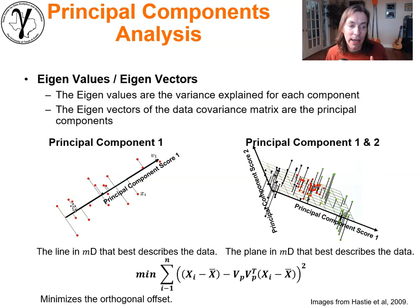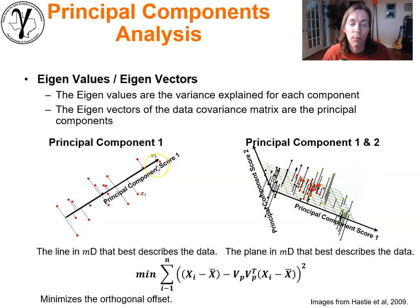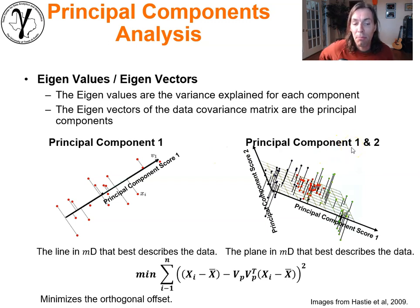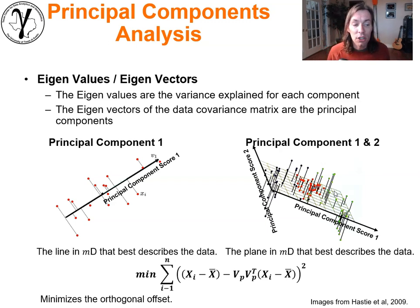When you project the m-dimensional data onto that first eigenvector line, it describes the most variance. Taking principal components one and two together gives a plane that describes as much variance as possible when data is projected onto it. This forms a very good model to describe the dataset in one or two dimensions — the best description from the standpoint of variance.